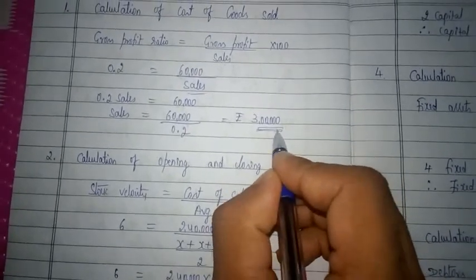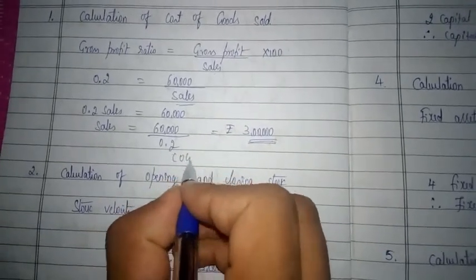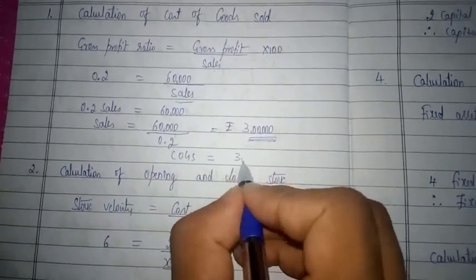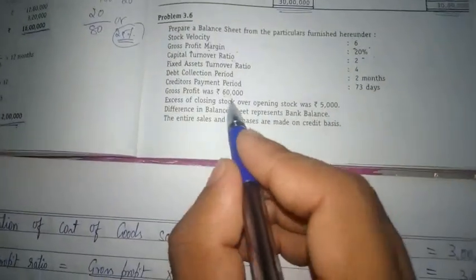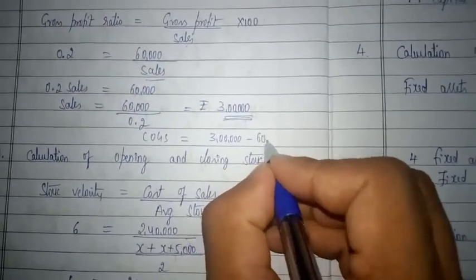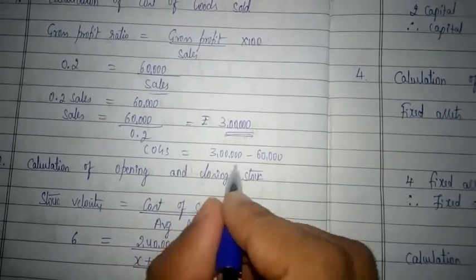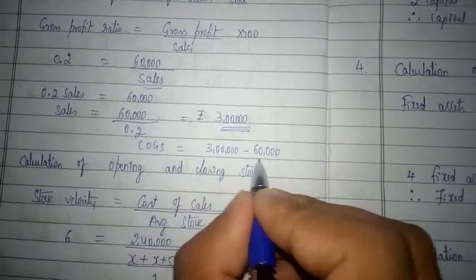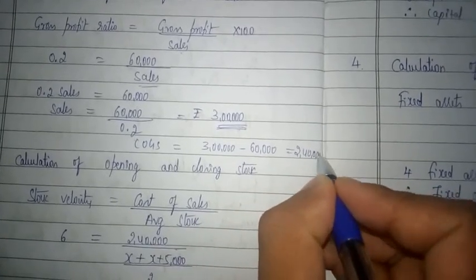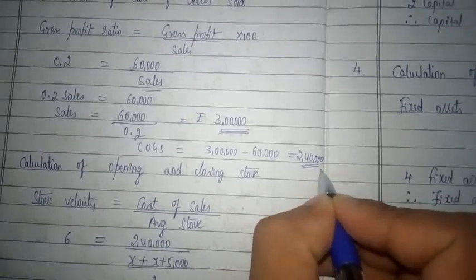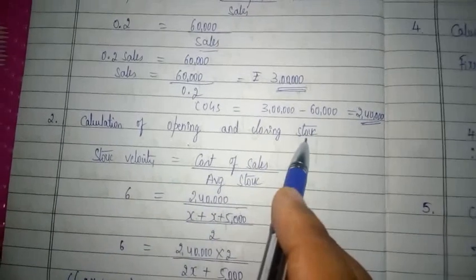Using the sales value, we can now calculate cost of goods sold. COGS = Sales − Gross Profit = 3,00,000 − 60,000 = 2,40,000 rupees. Now let us calculate the opening and closing stock.